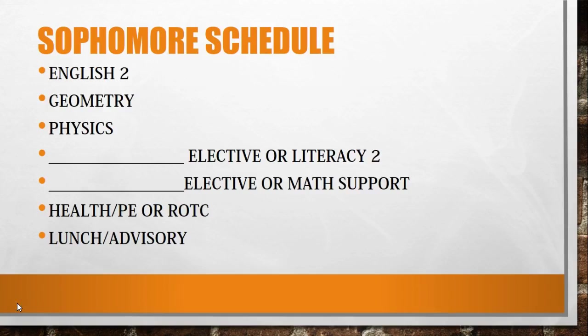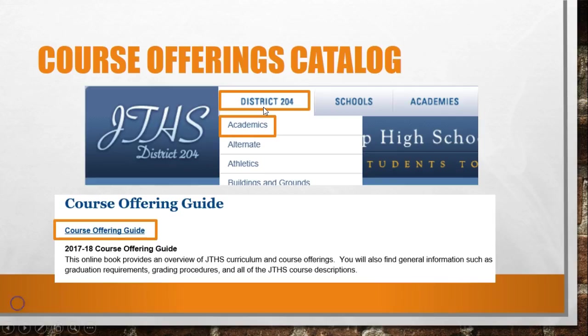This is an example of a typical sophomore schedule. You will have six academic courses and a lunch and advisory. Please visit our website to access our course offerings guide, which will provide a course description for each class. The course offerings guide can be found at www.jths.org — place your cursor over the District 204 tab, click on Academics, then click on the course offering guide to reach the course descriptions.